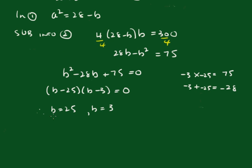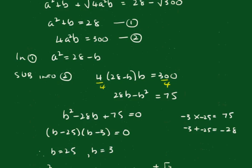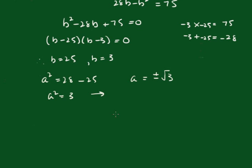Therefore b equals 25 or b equals 3. We'll take b to be 25 and substitute it back in, so we get a squared equals 28 minus 25, so a squared equals 3, which means a equals plus or minus root 3. Going back to the original form a plus root b, taking the positive case: root 3 plus square root of 25.